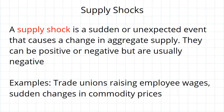A supply shock is a sudden or unexpected event that causes a change in aggregate supply. A supply shock could be positive or negative. In the case of a positive supply shock, it's an unexpected event that increases supply. But typically you will see negative supply shocks — those are by far the most common. An example of a negative supply shock is trade unions raising the wages of employees, which is an increase in factor costs shifting supply to the left. Alternatively, you could have a sudden change in certain commodity prices, for example the price of oil.